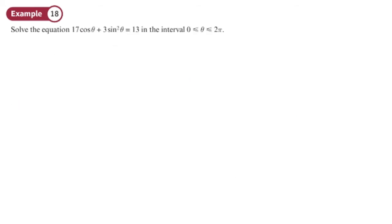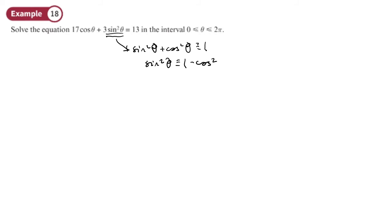Another equation: whenever you've got trig equations, you either want sine, cos, or tan alone, or you want a form you can factorise. You can't factorise this one. But there's an identity we can use: sin²θ + cos²θ = 1, so sin²θ = 1 − cos²θ. If we make that substitution, we'll have everything in terms of cos.